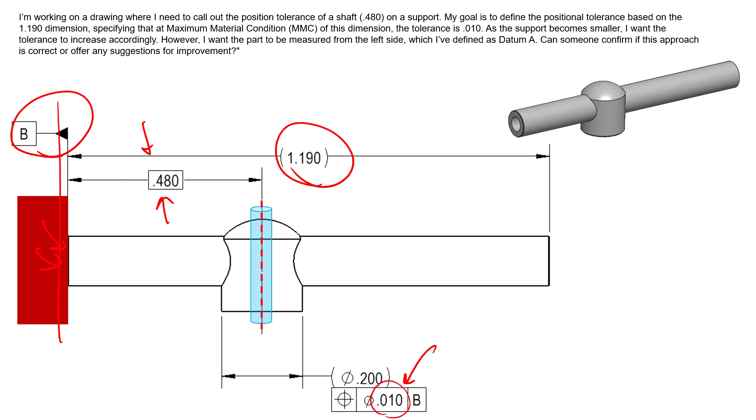Now we could also apply some bonus tolerance here. We could put the MMC modifier next to this value right here and say that if this came in a little bit smaller, we could have bonus tolerance in addition to the 0.010. So that's another opportunity or another way to control the location of this part with respect to this part. And you're utilizing this end here to control the location of the axis of our support. And again, if you would like to include bonus tolerance, put that MMC modifier next to that position tolerance there.